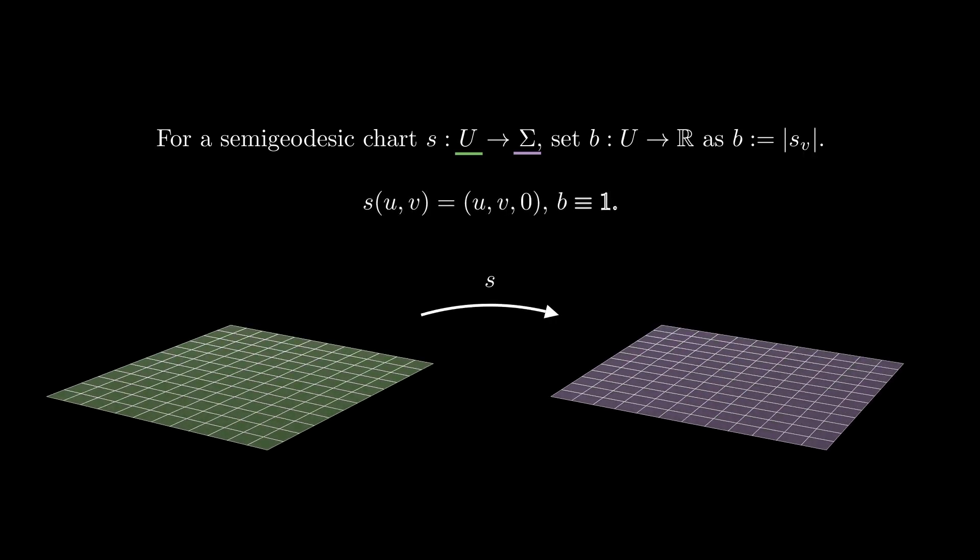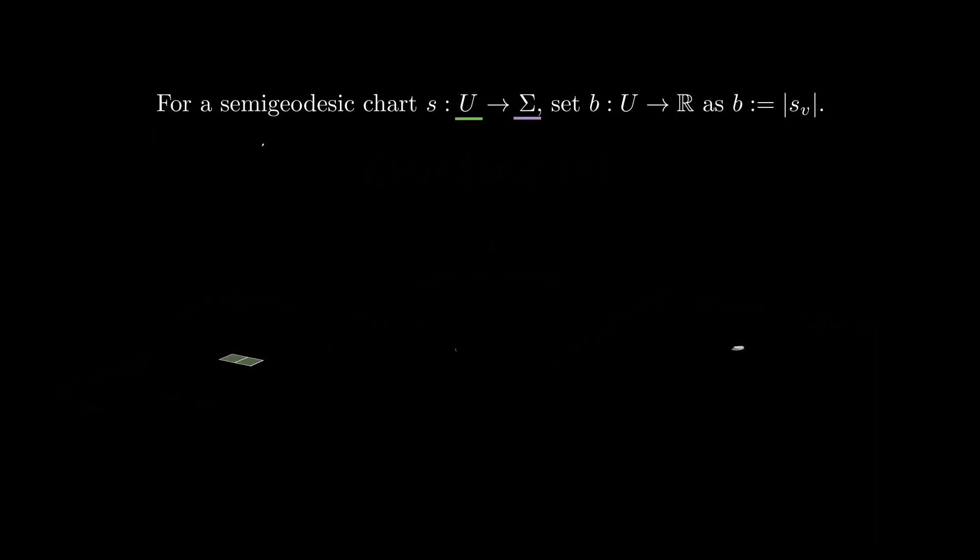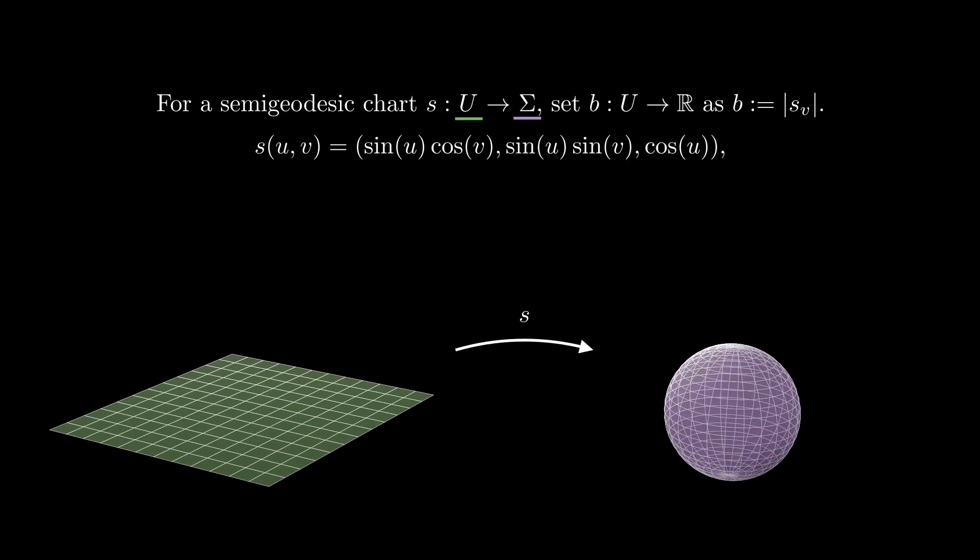Let's look at a couple of examples. In the flat plane, the identity is clearly a semi-geodesic chart and V happens to be constant. In the unit sphere, the map given by spherical coordinates is easily seen to be a semi-geodesic chart as meridians are unit speed geodesics. Here V equals sine of U, which is concave with respect to U.